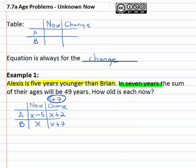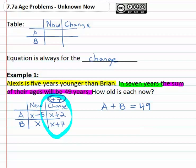Now let's keep going through the problem to come up with our equations. What happens in seven years? The sum of their ages will be forty-nine years. The sum of their ages. Alexis's age plus Brian's age will be forty-nine years. But that's talking about the future. That's talking about what happens in the change column. This means Alexis can be represented in the future with this change column of x plus two. Plus Brian can be represented in the future. Brian in the change column is x plus seven is equal to forty-nine.